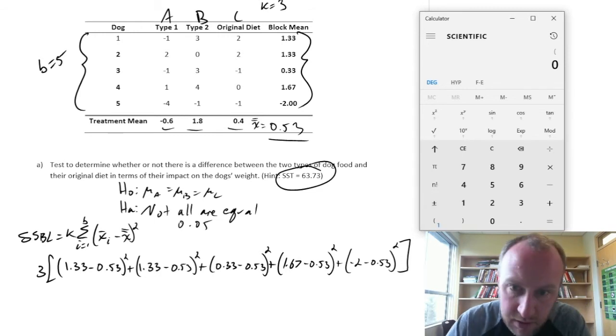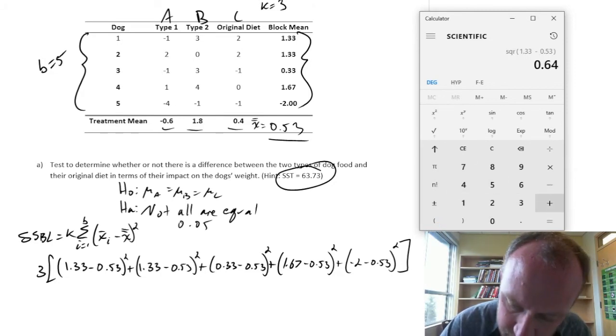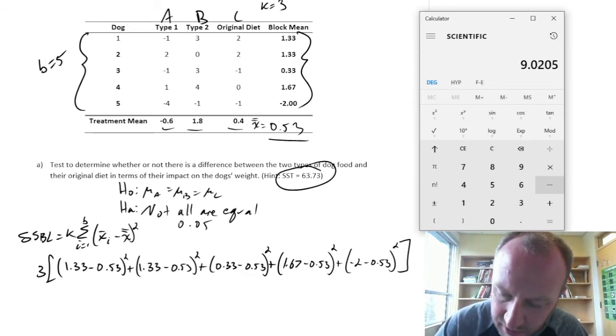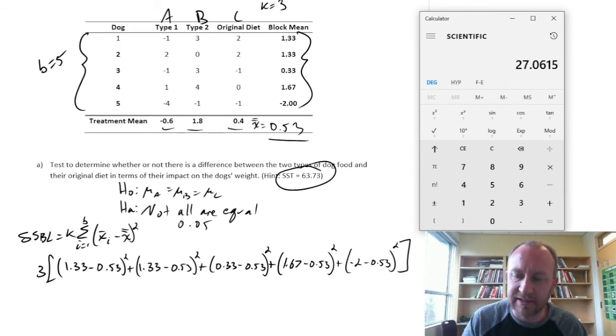Okay. Fast forward. Okay. 1.33 minus 0.53 squared plus 1.33 minus 0.53 squared plus 0.33 minus 0.53 squared plus 1.67 minus 0.53 squared plus the last one. Negative 2 minus 0.53 squared. Minus 0.53 squared. Equals 9 times 3. Equals 27.1. Okay.